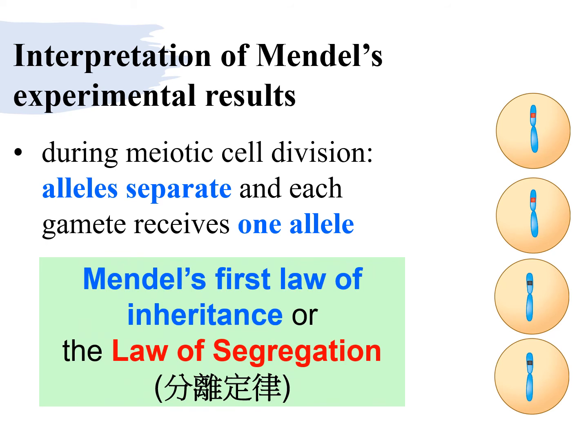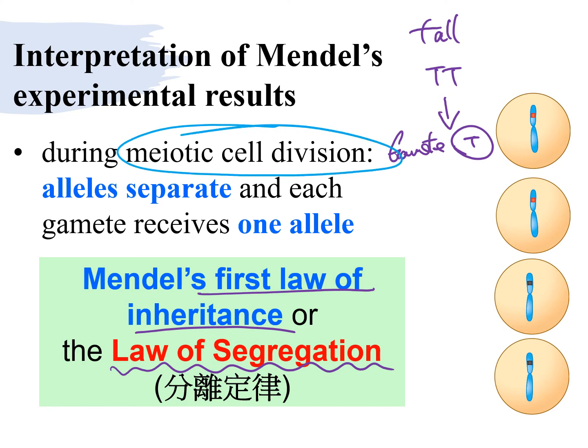Mendel says that for the parent plant such as the tall plant, it has the big T and big T together. When it gives the gamete, it's going to only give one of it, only one allele. So therefore, we call this the first law of inheritance or the law of segregation using the idea of meiotic cell division.